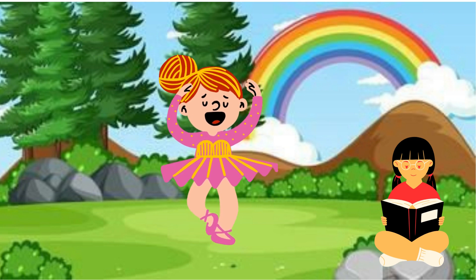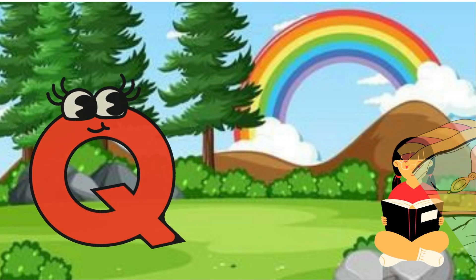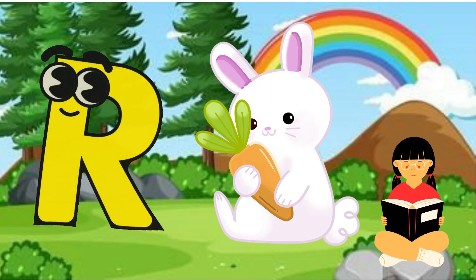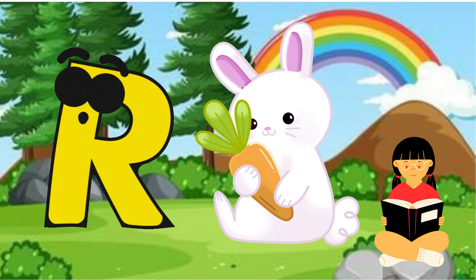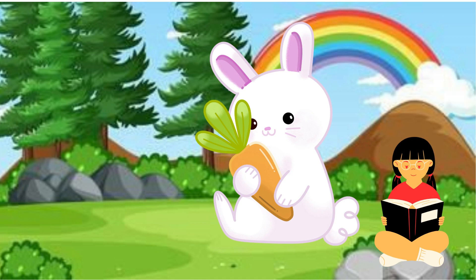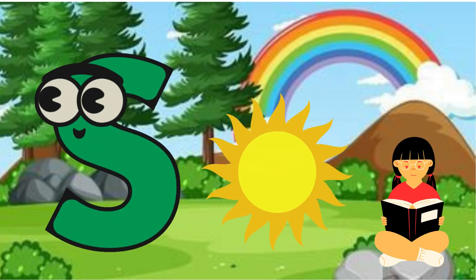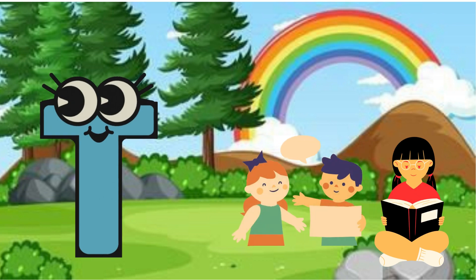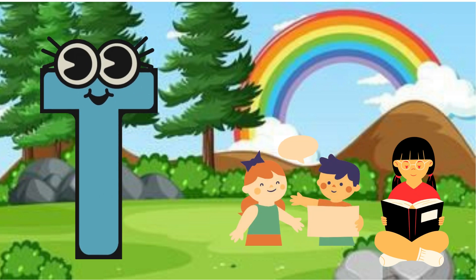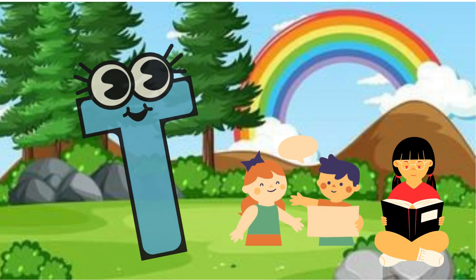Q is for Queen, Q-Q-Queen. R is for Rabbit, R-R-R-Rabbit. S is for Sun, S-S-Sun. T is for Toad, T-T-Toad.